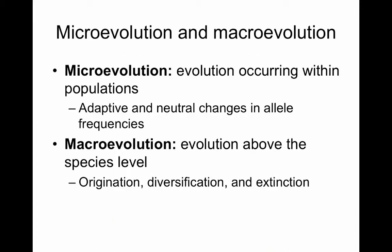Our field, evolution, has historically been divided into two parts. Microevolution — that's evolution occurring within populations, essentially Dobzhansky's definition of evolution as changes in gene frequencies in populations. And macroevolution — changes above the species level: the origination, diversification, and extinction of species or groups of species.